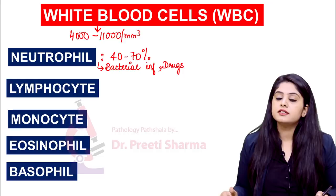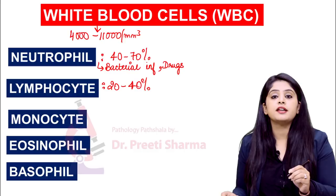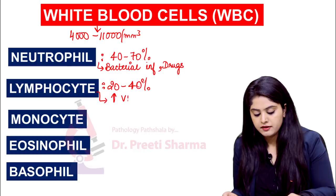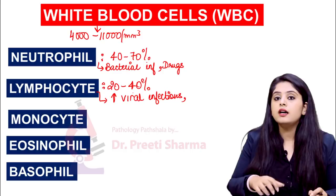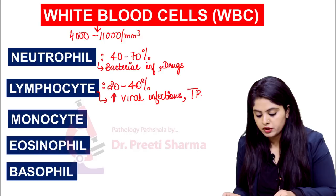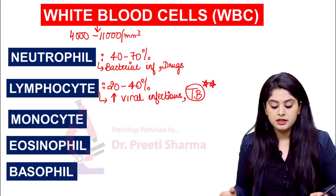Also, a drug used in the treatment of mania — lithium — can also cause an increase in neutrophils. That is a pharmacology link you need to know. Next, lymphocytes have a normal proportion of 20 to 40 percent. Lymphocytes are cells of chronic inflammation. Lymphocyte levels will be increased in viral infections. Also, is there any particular infection — particularly in India — which tends to cause an increase in lymphocytes? Yes, it is tuberculosis. So remember: viral infections and TB will show an increase in lymphocyte count.